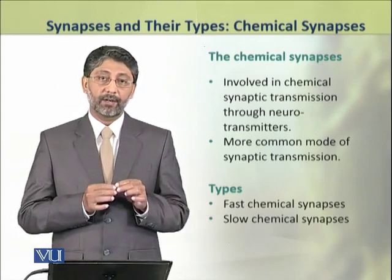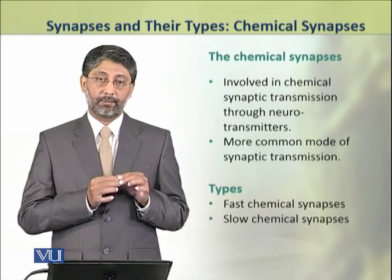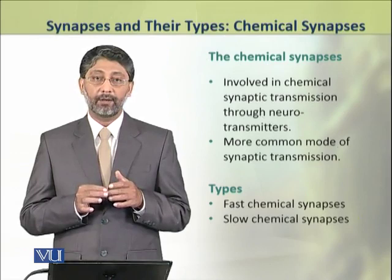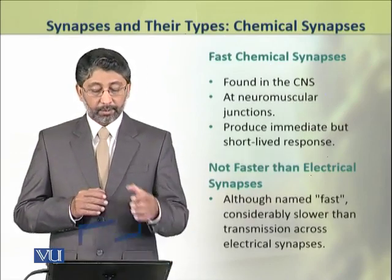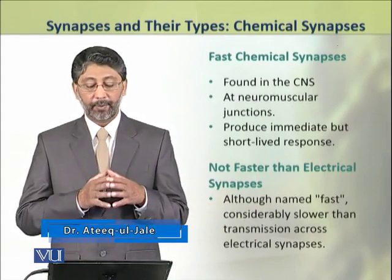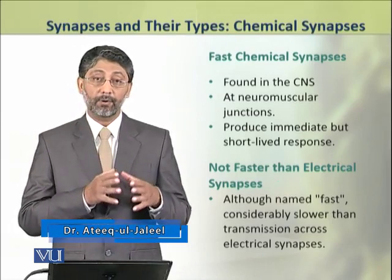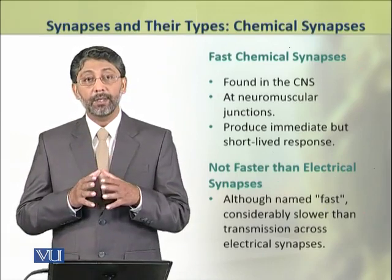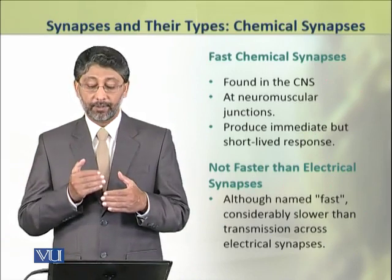There are two types of chemical synapses: fast chemical synapses and slow chemical synapses. The fast chemical synapses are present in the central nervous system and at neuromuscular junctions. They produce immediate but short-lived responses.